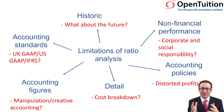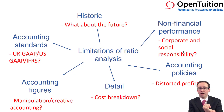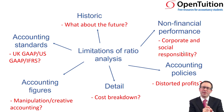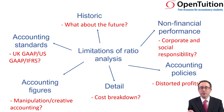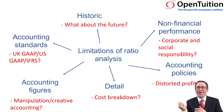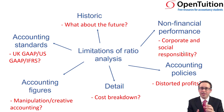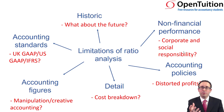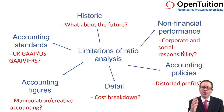So that gives you six limitations of ratios. Learn them so you get partial credit for the knowledge, and then the remaining credit for the application — knowing why each one is a limitation. Don't just say 'historic'; explain that historic information doesn't help predict the future, and that things can happen beyond your control. Work through them, write them down, do that research, and you should be fine with any Section C exam question on analysis and interpretation of financial statements. Thank you.